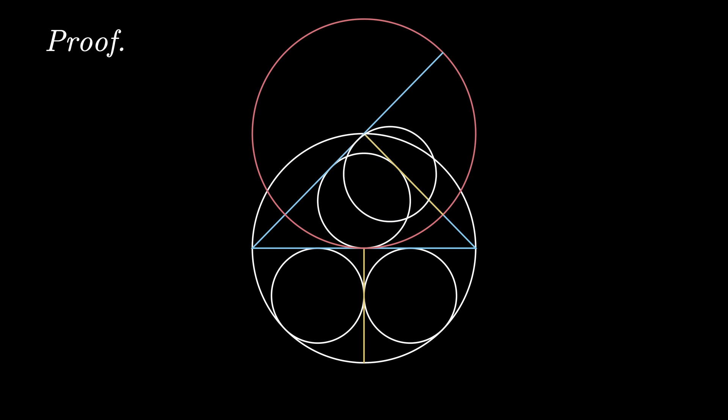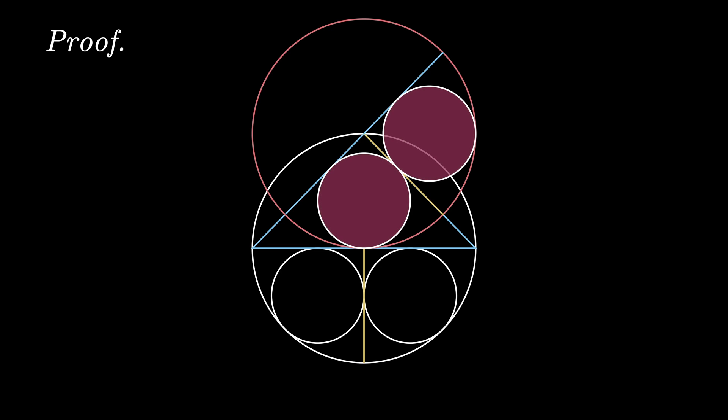From this perspective, we see that the top circle inscribed in the triangle is actually one of the pair of the two circles inscribed in the two quadrants of this new circle.